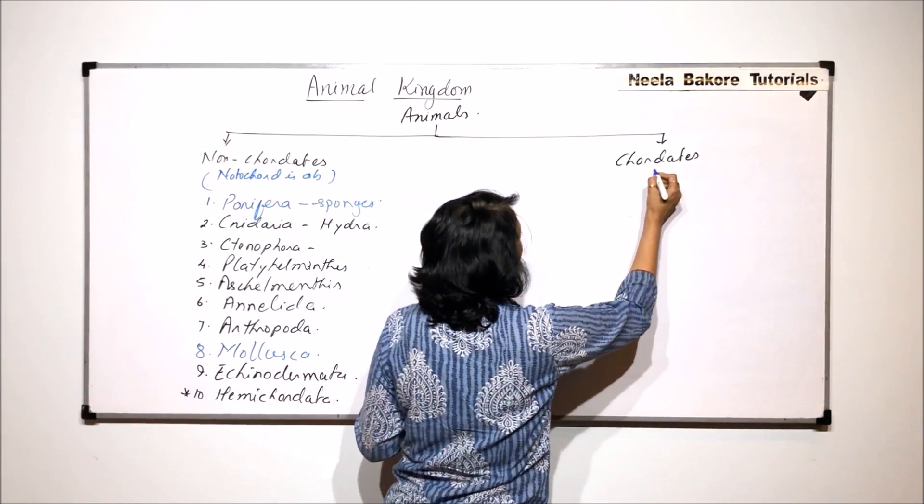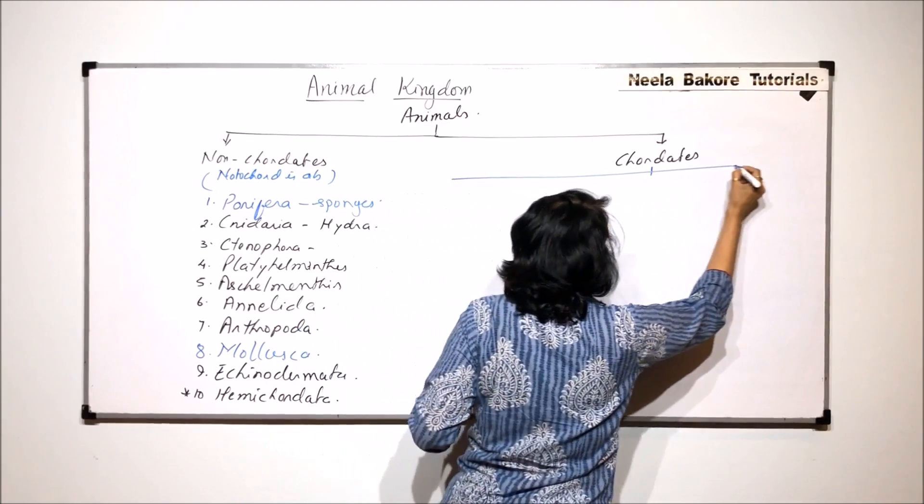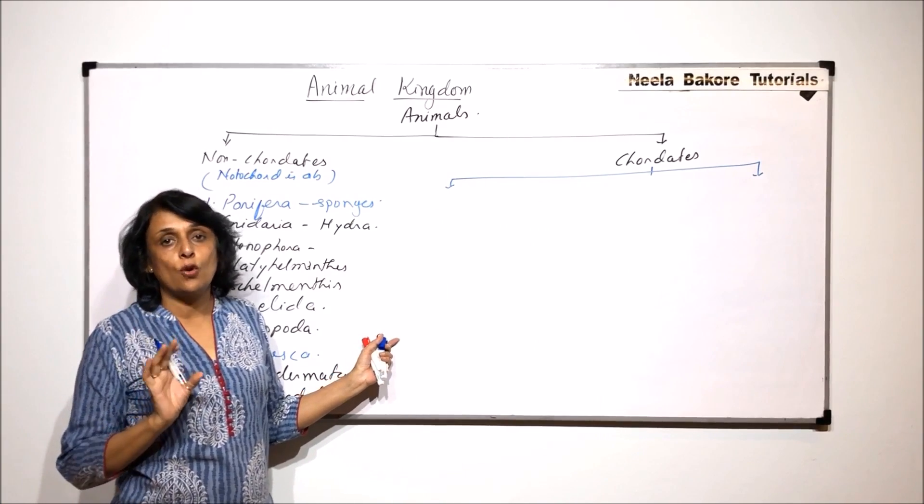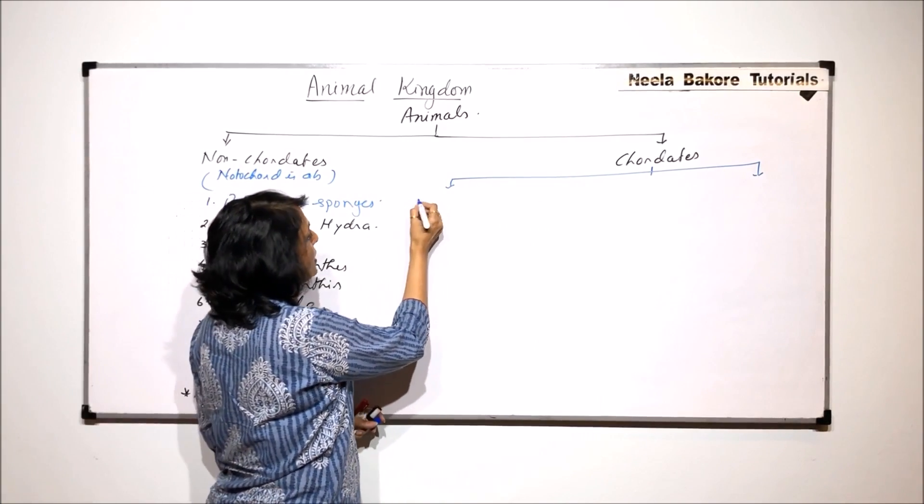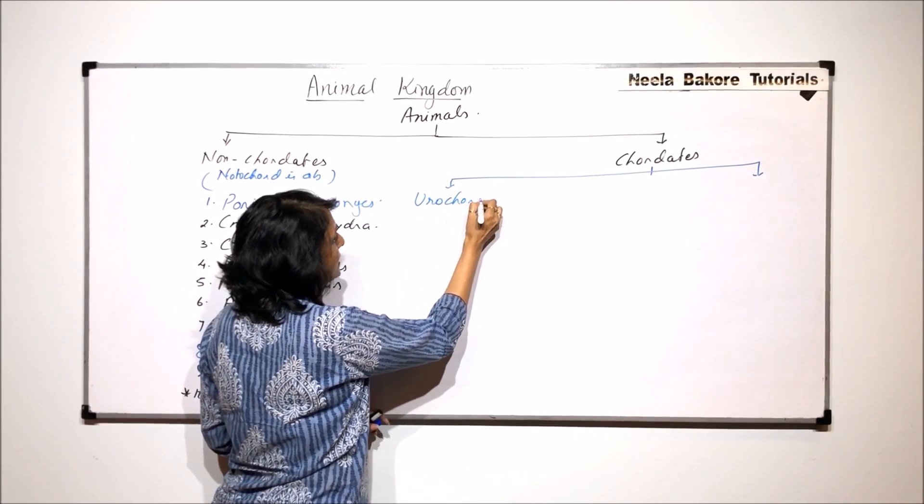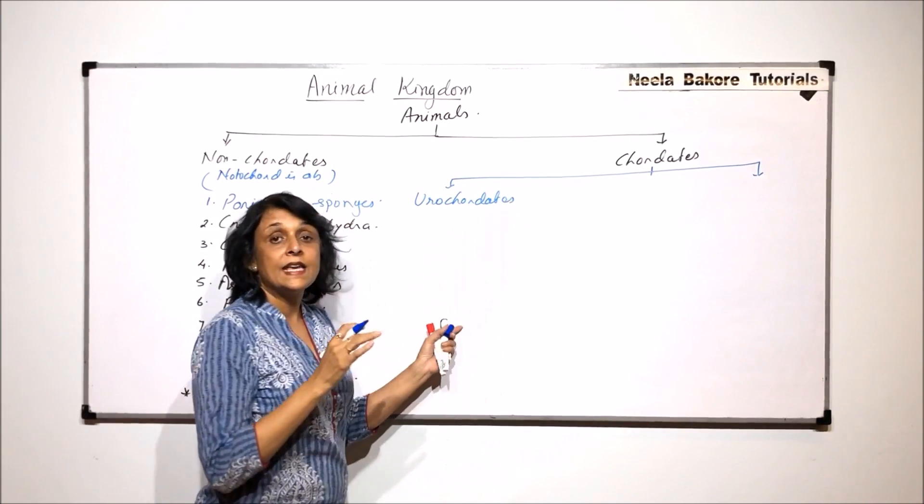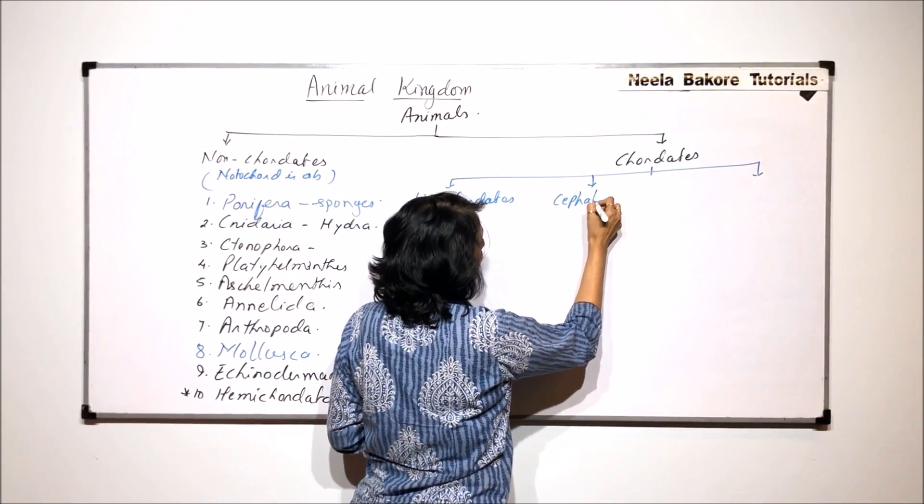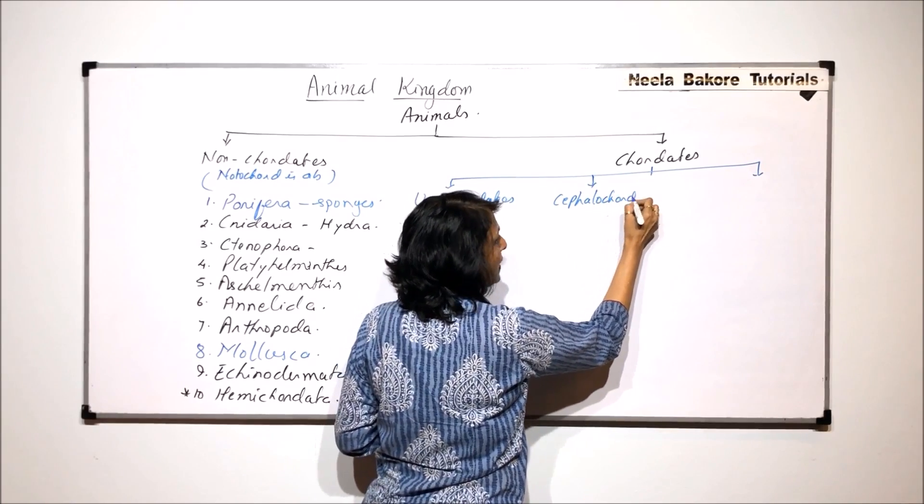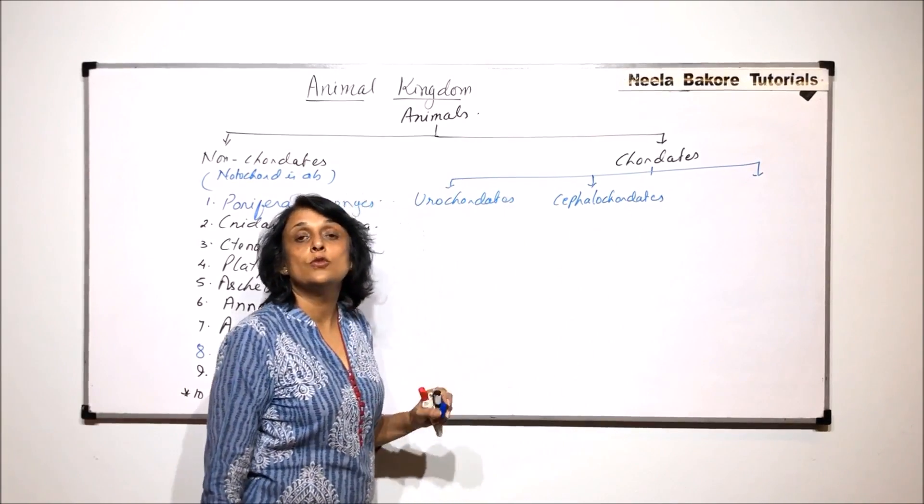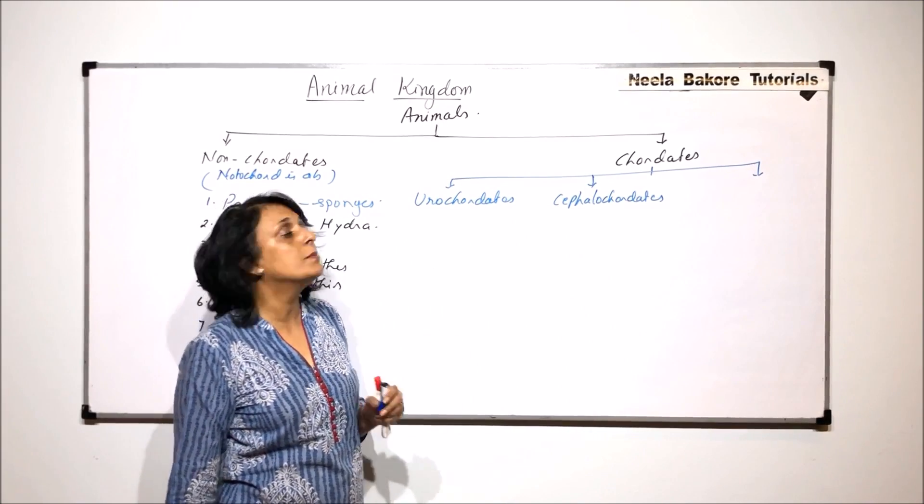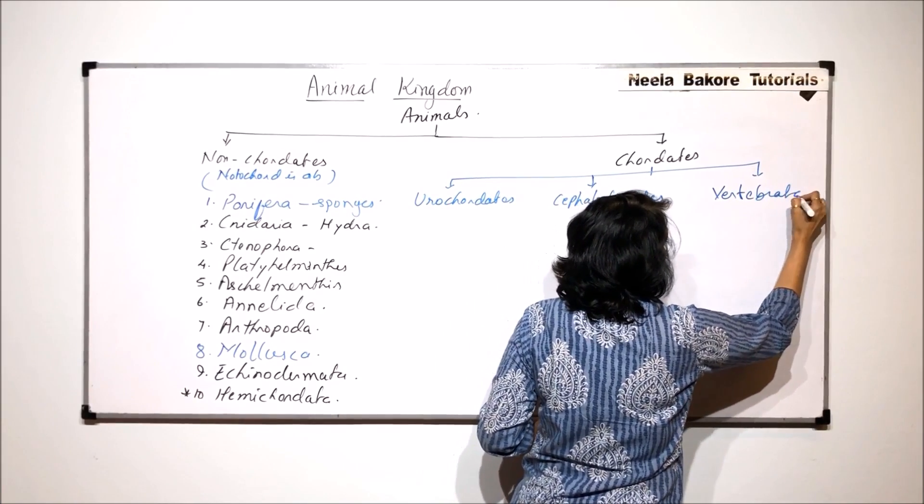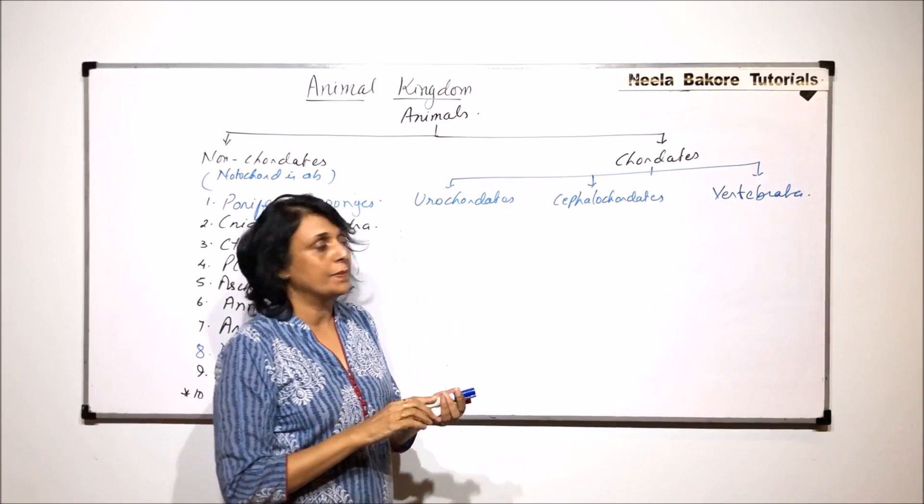Now, the chordata or chordates, they are classified again into three categories on the basis of where this notochord is found. If it is only in the tail region, we call them urocordates. If it is head to tail, then they are called cephalochordates. And in animals where this notochord gets completely replaced by vertebral column, then they become the vertebrata. So we will further classify these vertebrates.